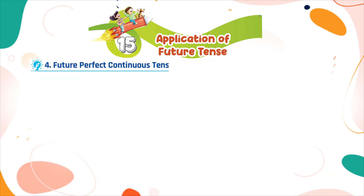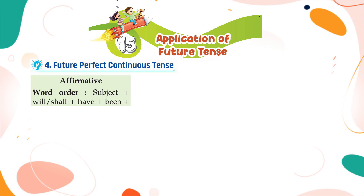Future Perfect Continuous Tense. Affirmative word order: subject plus will or shall plus have plus been plus verb in first form plus -ing plus object plus time phrase.